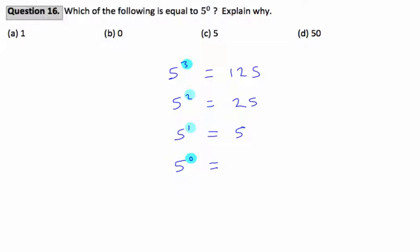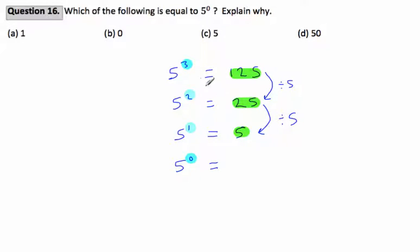If we look at what's happening on the right-hand side, looking at the numbers — the 125, 25, and 5 — what's happening as we move down? To get from 125 to 25, we divide by 5. And to get from 25 down to 5, we divide by 5. So the pattern developing is: as you move down on the right, we're dividing by 5, and on the left, we're decreasing the power by 1. So if we follow this logic and divide by 5 again, 5 divided by 5 is 1.